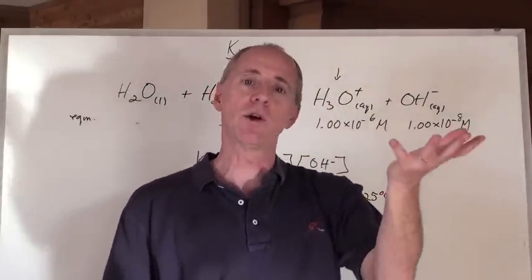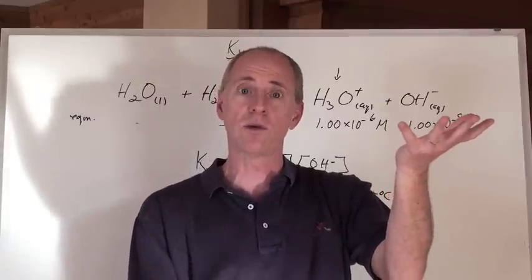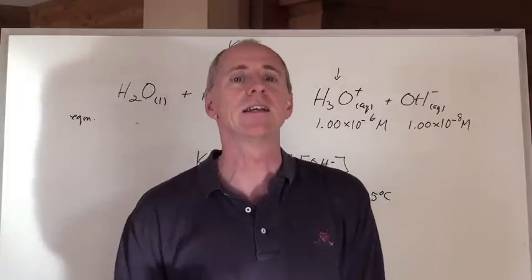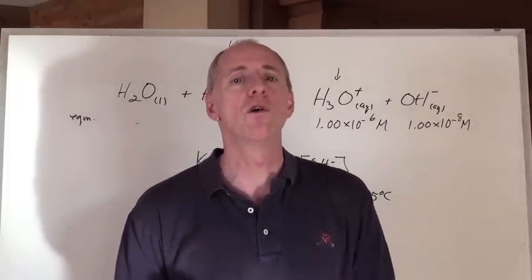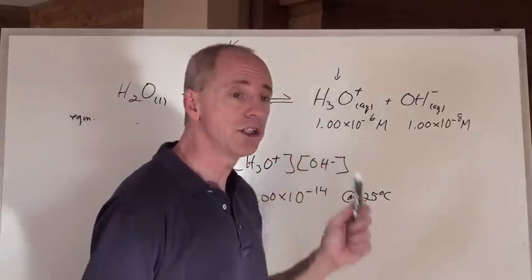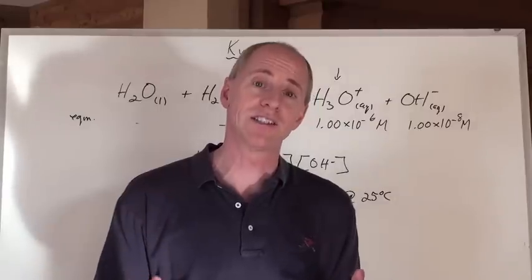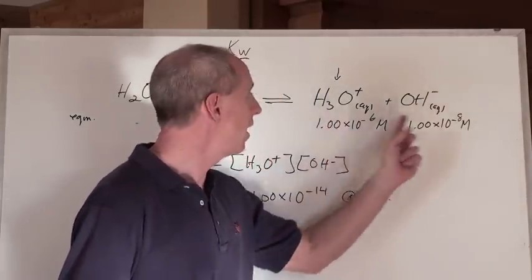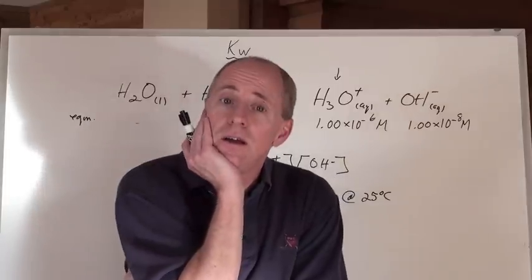As much as the hydronium goes up in a solution, the hydroxide will go down. And conversely, if the hydroxide goes up, the hydronium would go down. And the interesting thing is, the pH would go from that original solution, where water has a pH of 7 normally, at 25 degrees Celsius. In this case, the pH is 6.